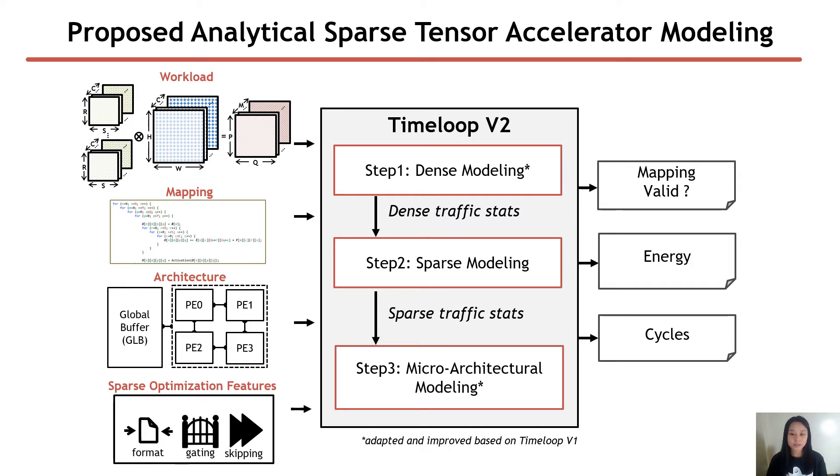The first step is the dense modeling stage where it does not care about the sparsity in the workload and performs a dense traffic analysis of the storage level and compute. The second step is the sparse modeling where we post-process the dense traffic stats and apply the impact of the applied sparse optimization feature and analyze the final sparse traffic stats.